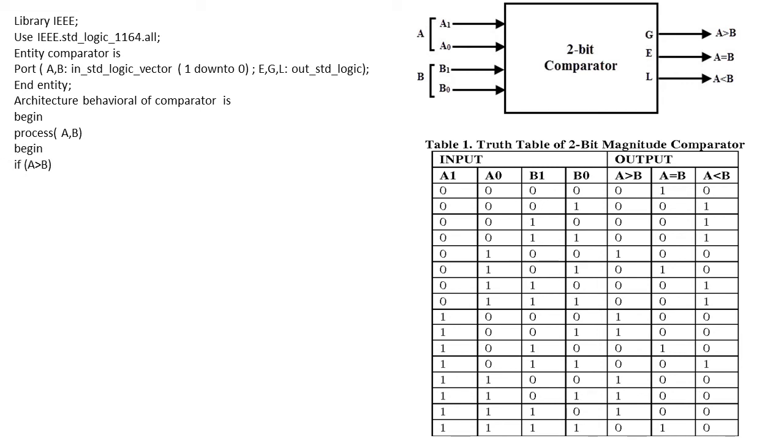We write the first statement as if A is greater than B. If this condition is satisfied, definitely equal becomes 0, greater as 1, and less equals 0.